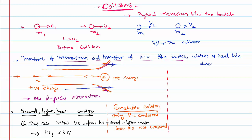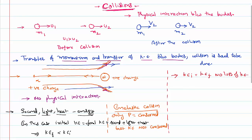We can also consider some ideal collisions where initial kinetic energy is equal to final kinetic energy — meaning there is no loss of kinetic energy. Of course, momentum is also conserved: momentum initial equals momentum final. This kind of collision is called an elastic collision.